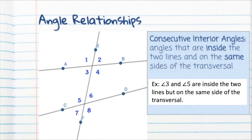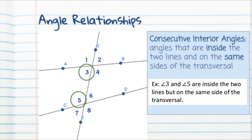Our last angle relationship is consecutive interior angles. They're inside the two lines but on the same side of the transversal. So angles three and five are consecutive interior angles. You can think of consecutive numbers as numbers right next to each other on a number line — consecutive angles are next to each other on the same side of the transversal. Angles four and six are also consecutive interior angles.